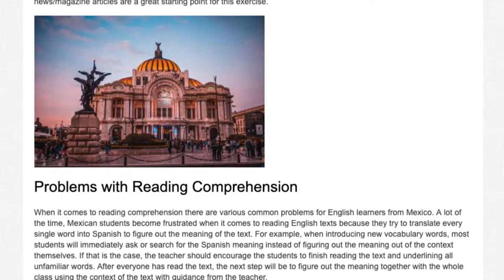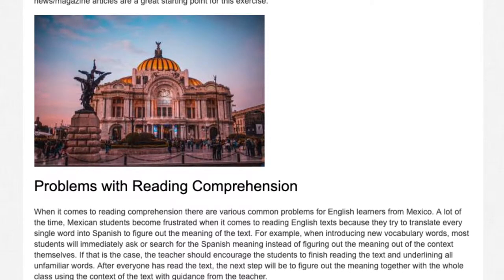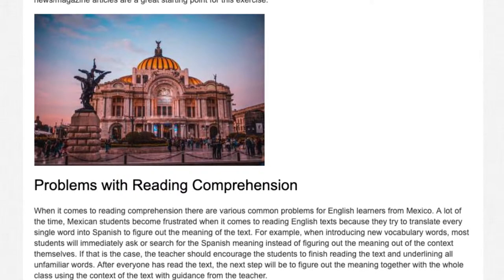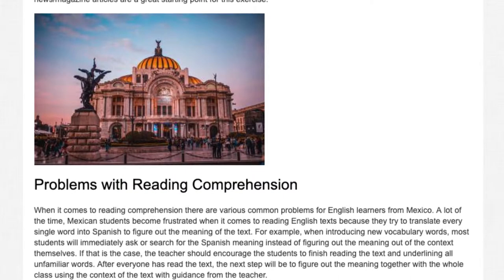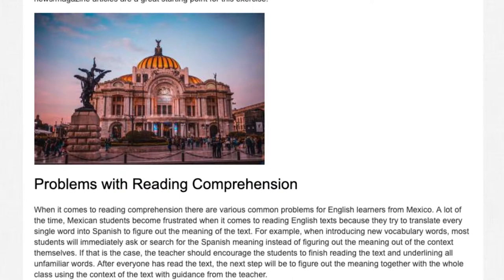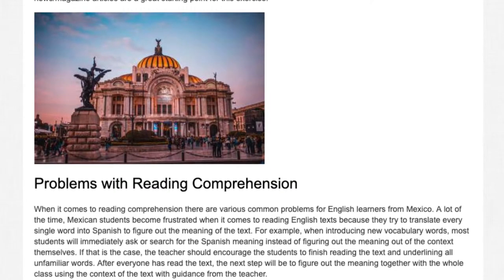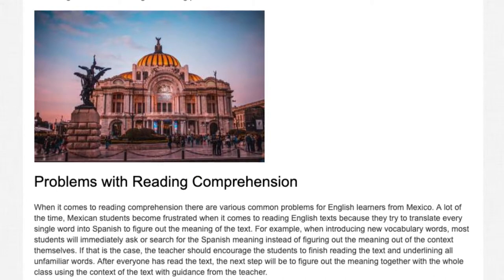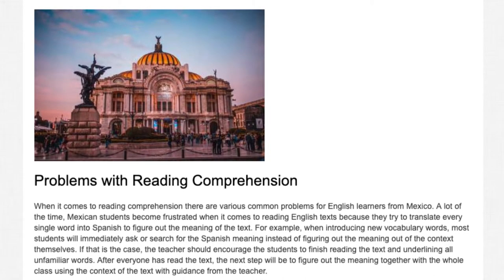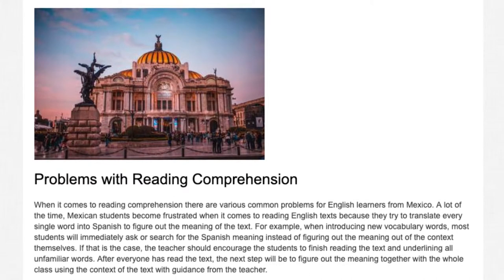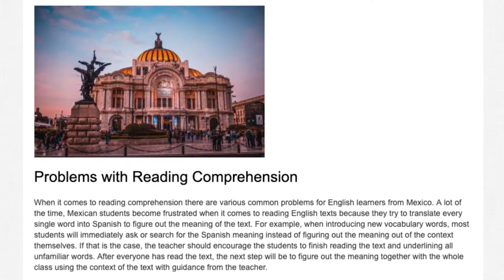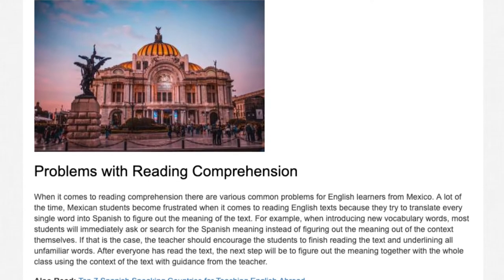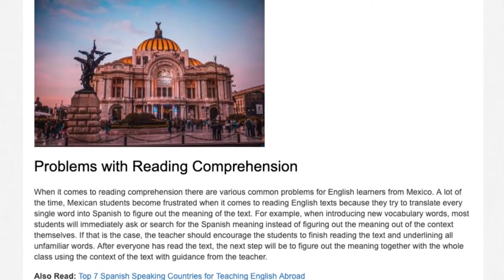Problems with reading comprehension: When it comes to reading comprehension, there are various common problems for English learners from Mexico. A lot of the time, Mexican students become frustrated when reading English texts because they try to translate every single word into Spanish to figure out the meaning. For example, when introducing new vocabulary words, most students will immediately ask or search for the Spanish meaning instead of figuring out the meaning from context themselves. If that is the case, the teacher should encourage the students to finish reading the text and underline all unfamiliar words. After everyone has read the text, the next step will be to figure out the meaning together with the whole class using context, with guidance from the teacher.